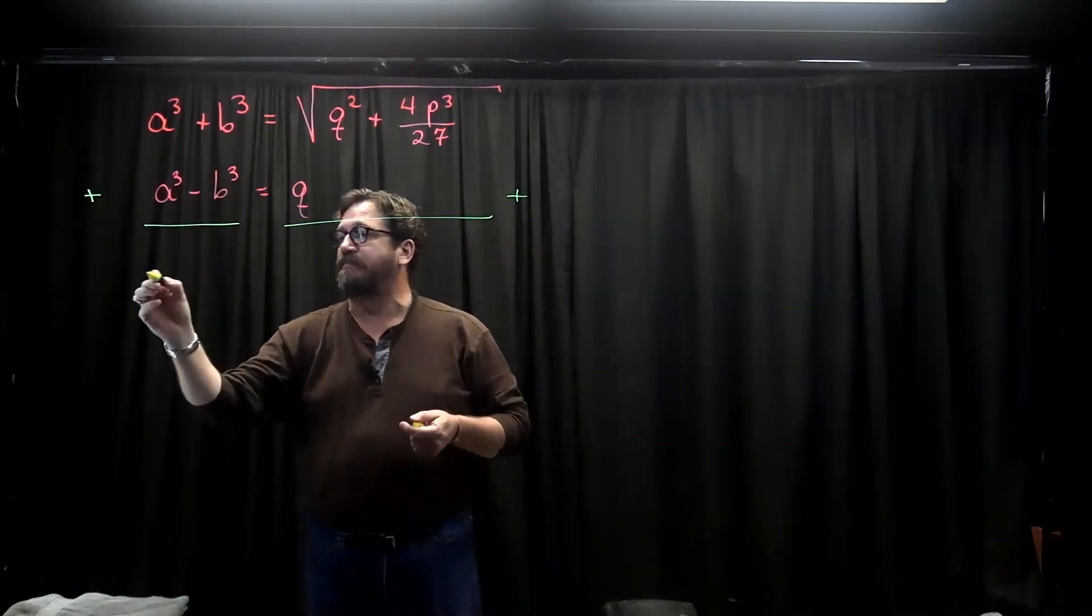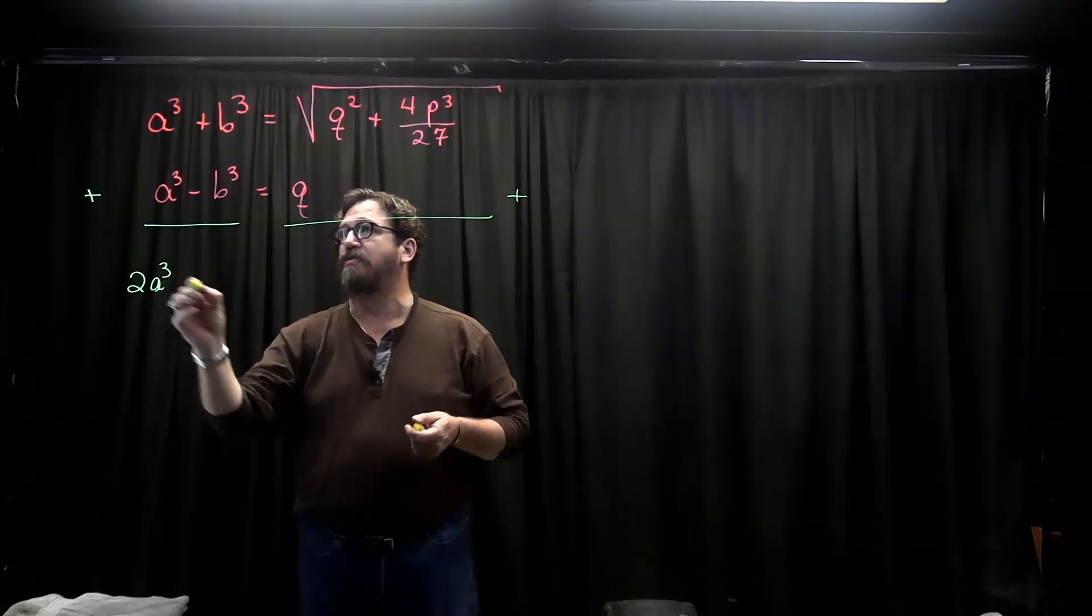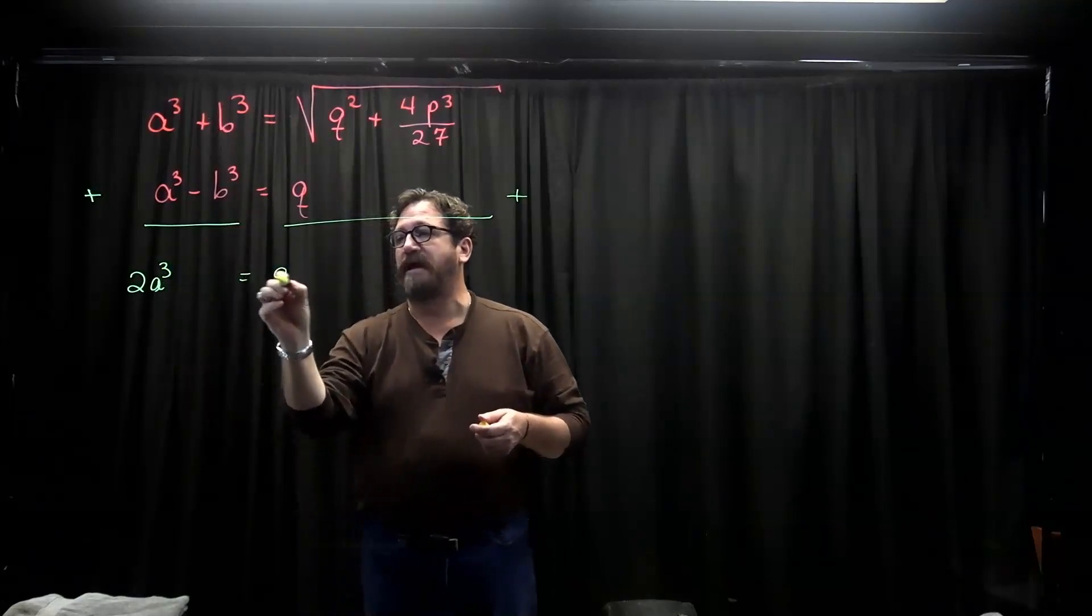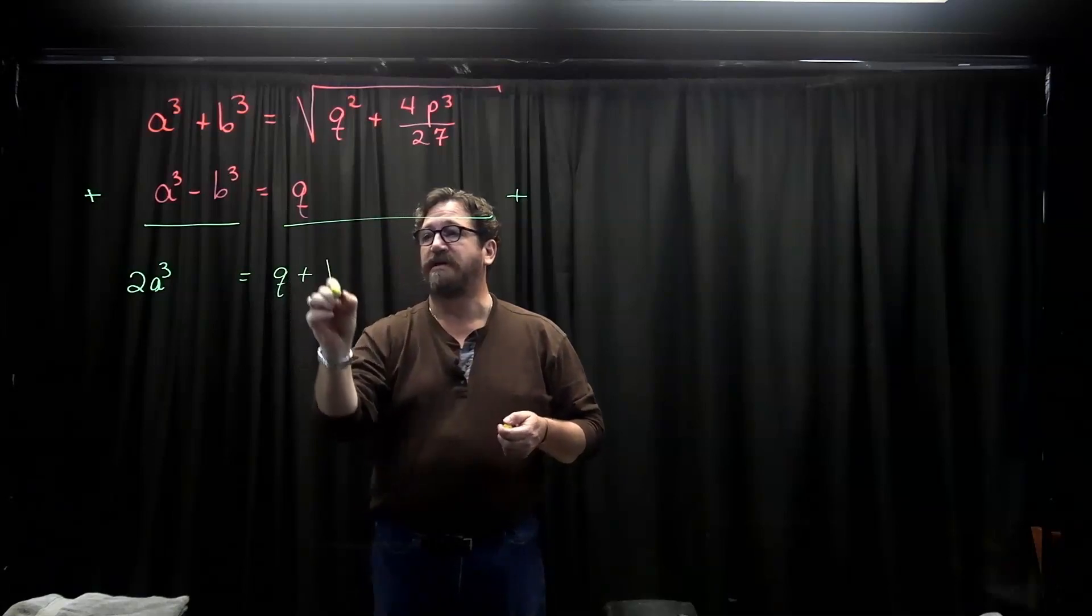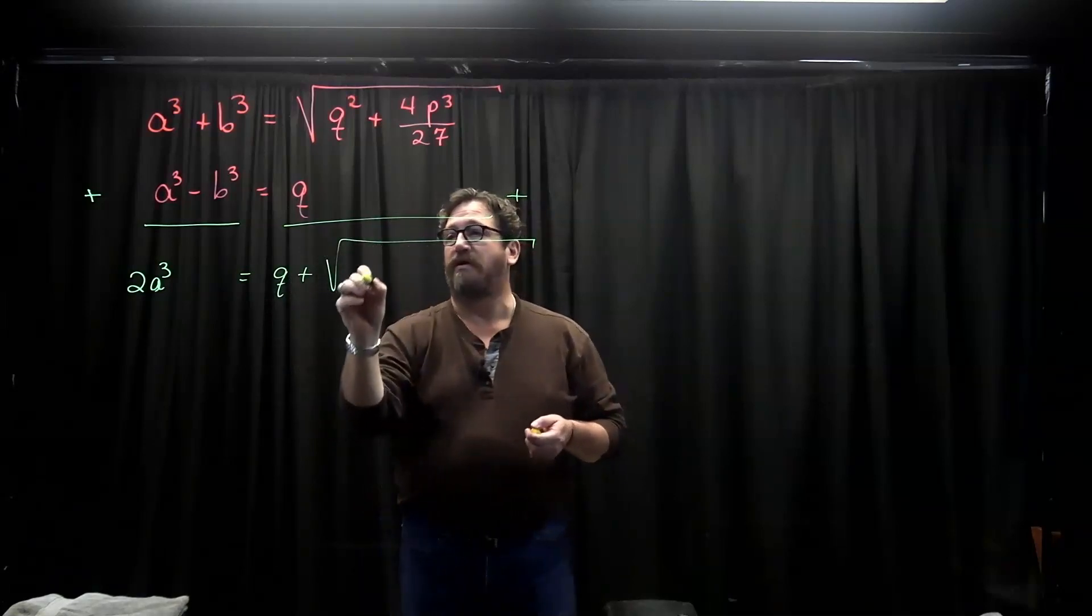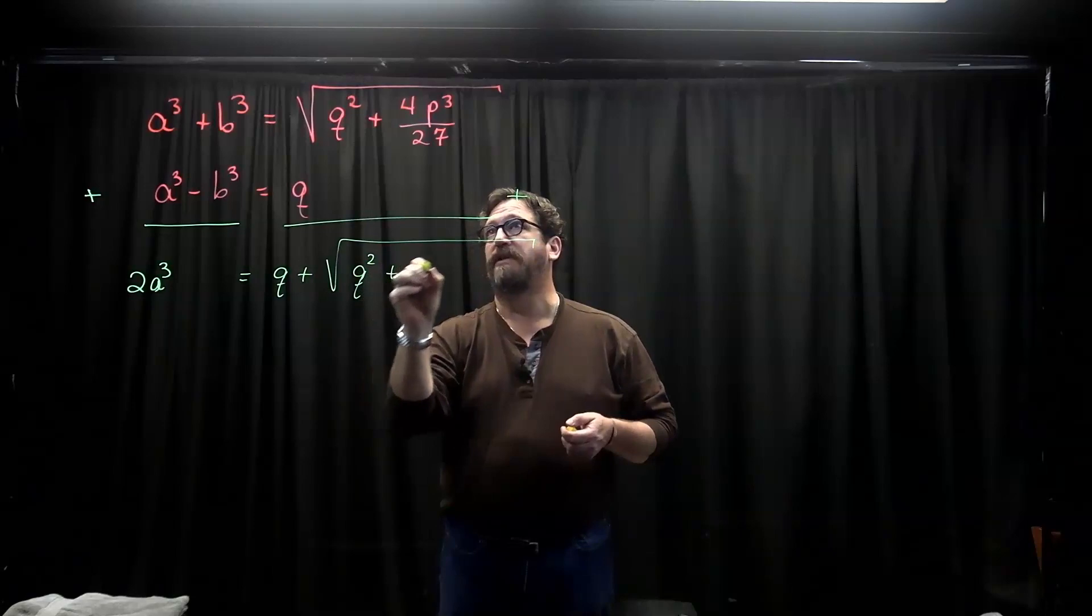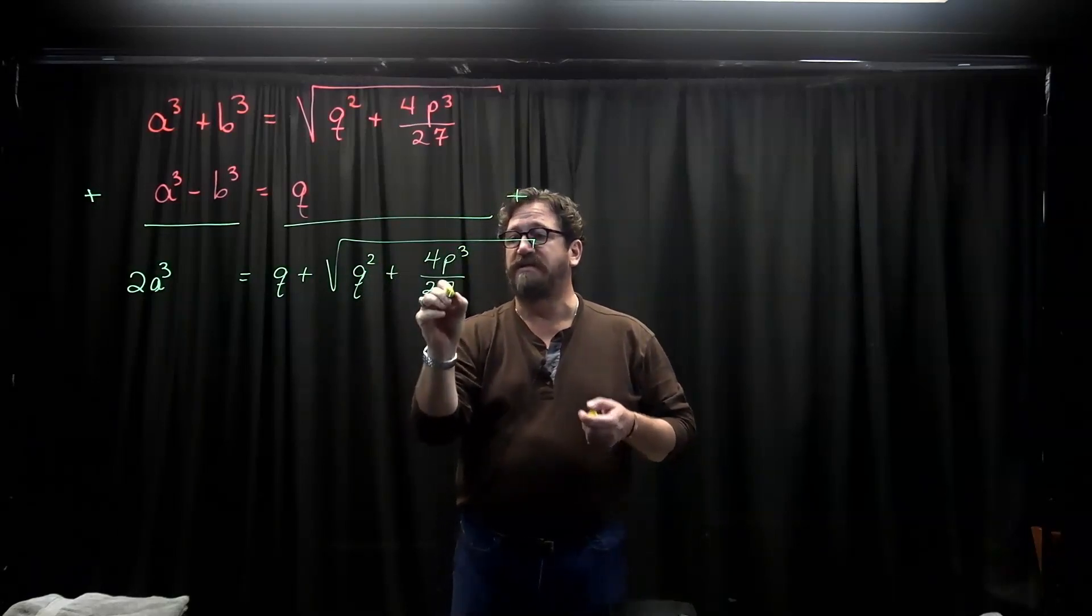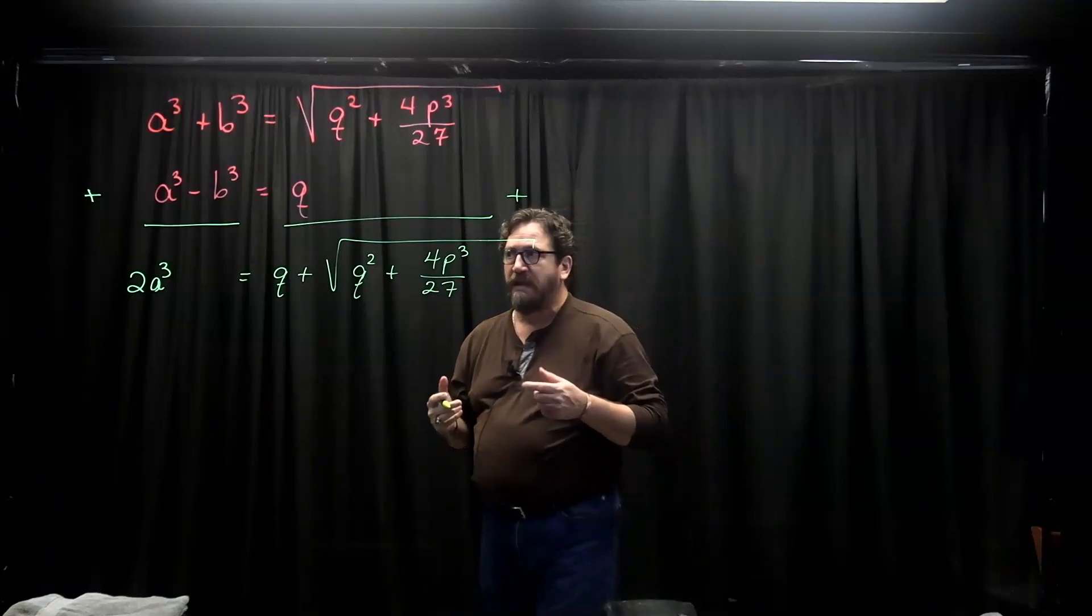And this way, I'm going to get 2a cubed. The b cubed will add to 0, and I'm going to have q plus the square root of q squared plus 4p cubed over 27.